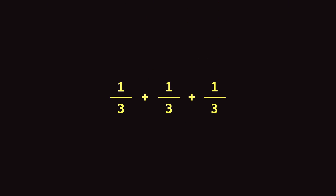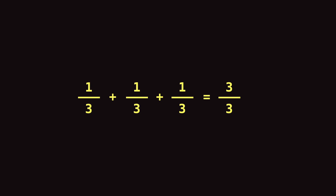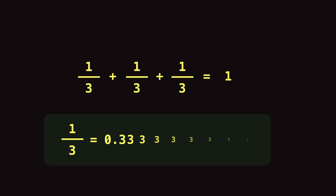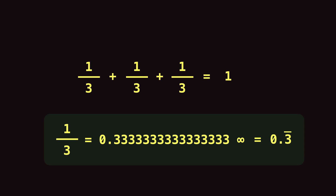If we add one-third plus one-third plus one-third, the result is going to be three-thirds, or it is going to be one. But if we actually perform this division of one by three, the result is going to be 0.333 all the way to infinity — or we can write it as 0.3 recurring, meaning three keeps repeating to infinity.